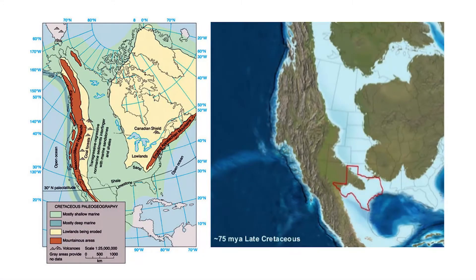Geologists can reconstruct past environments using the remains of long-dead organisms such as microfossils. For example, we know that much of Texas was a shallow ocean 80 million years ago during the time of the dinosaurs, because we find fossils of organisms in ancient sediments that can only live in oceanic environments.